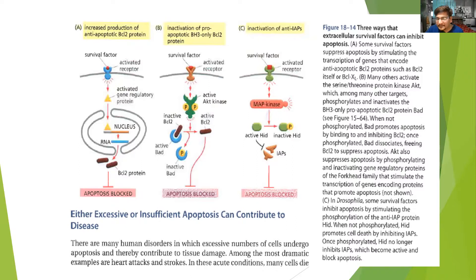Another way apoptosis is blocked is through inactivation of the IAPs — inhibitor of apoptosis proteins. A MAP kinase can activate heat shock protein, which has control over IAPs, which regulate apoptosis induction, and apoptosis is blocked.